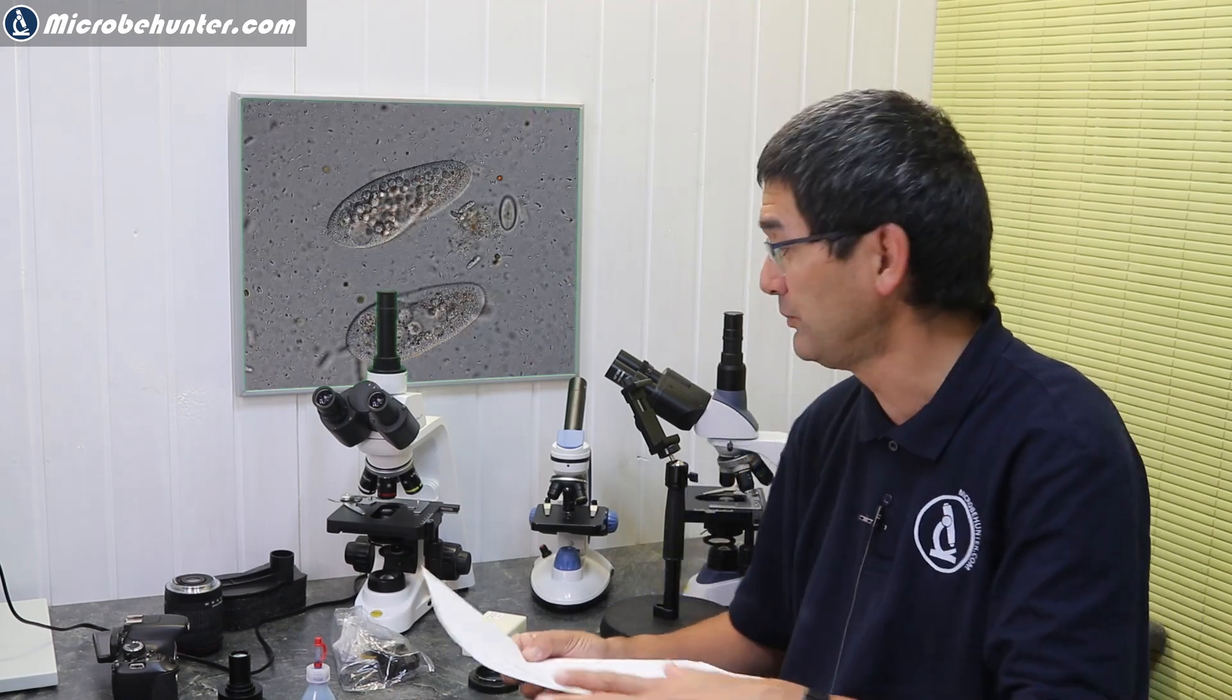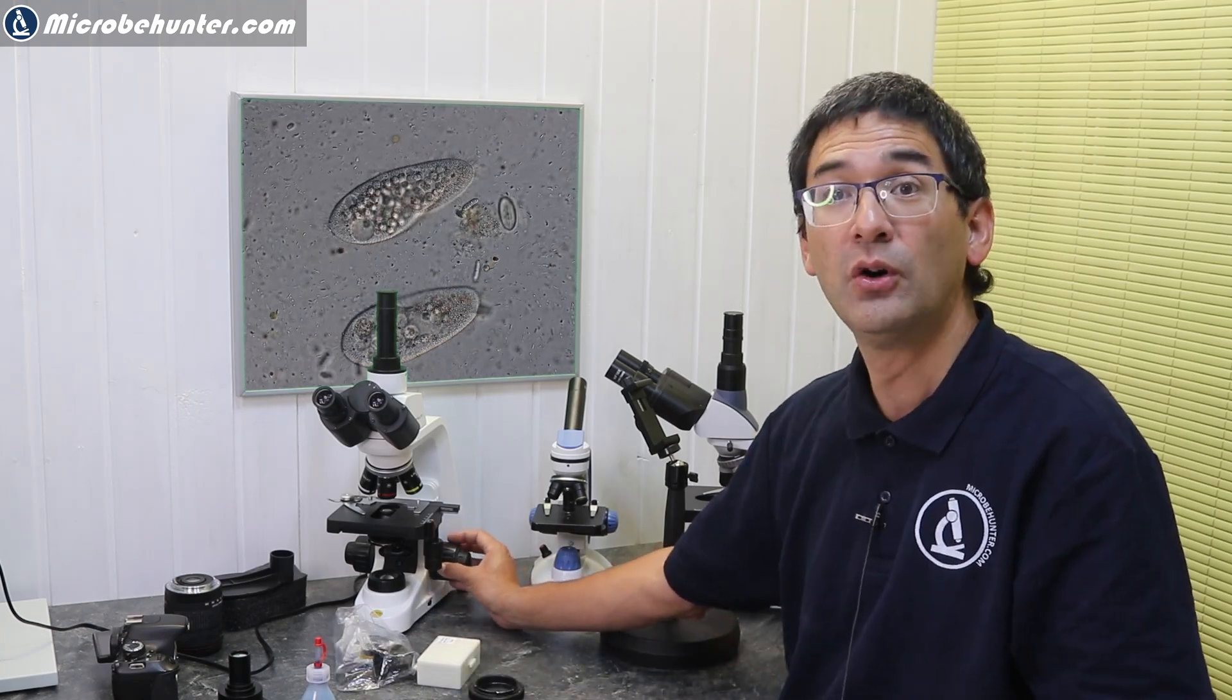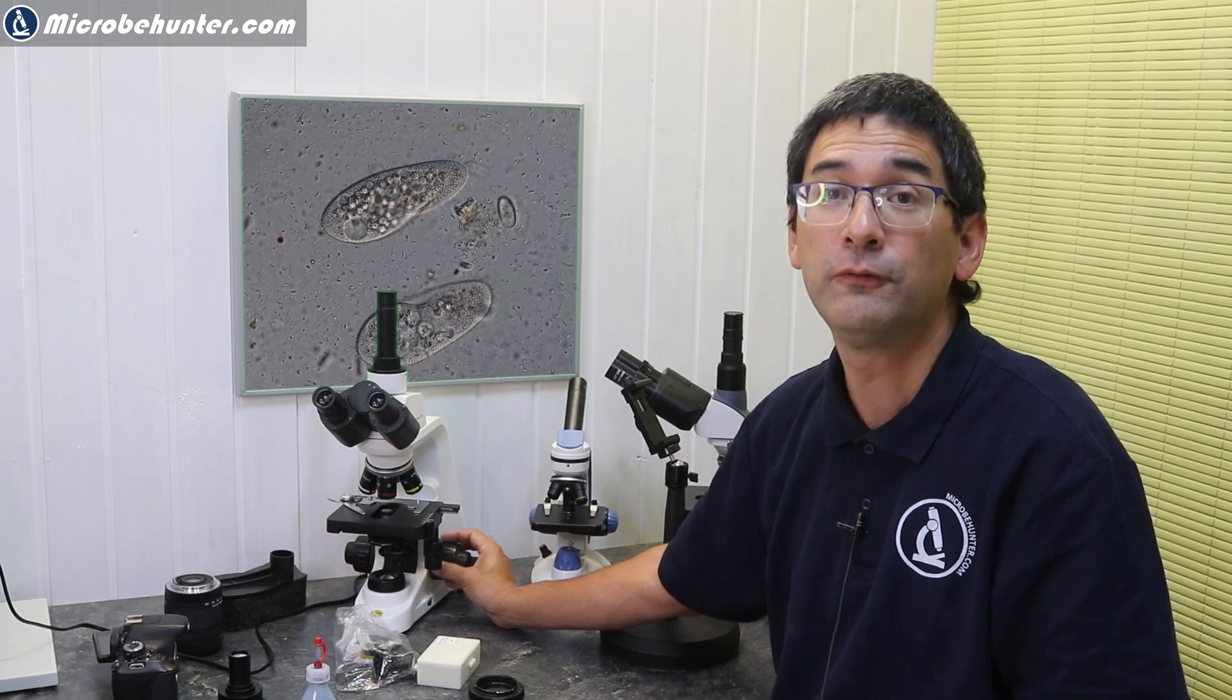Quality can refer to ergonomics. So especially if you're sitting many hours behind the microscope, it's important that the microscope is designed ergonomically. For example, this can include focus knobs that are relatively low. If it's relatively low here, then you're able to place your hand on the table while focusing. And especially if you have to sit behind the microscope for many hours, it's much more comfortable this way to be able to also rest your hand on the table.